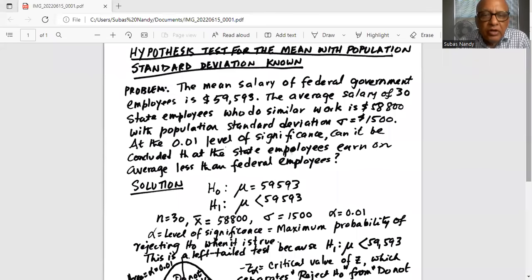The mean salary of federal government employees is $59,593. The average salary of 30 state employees who do similar work is $58,800 with population standard deviation sigma equal to $1,500.